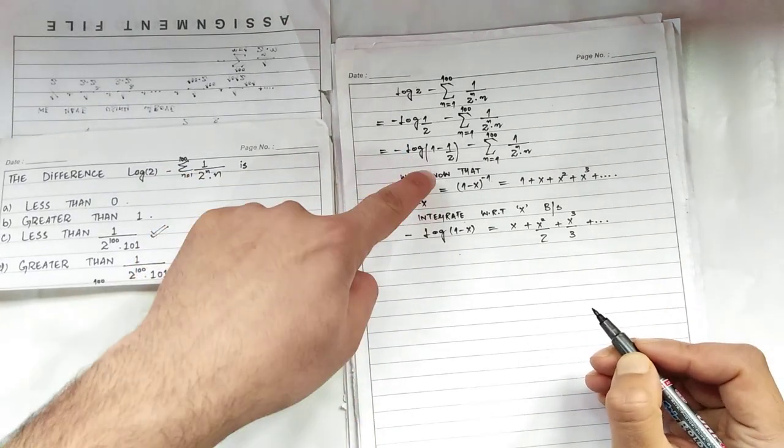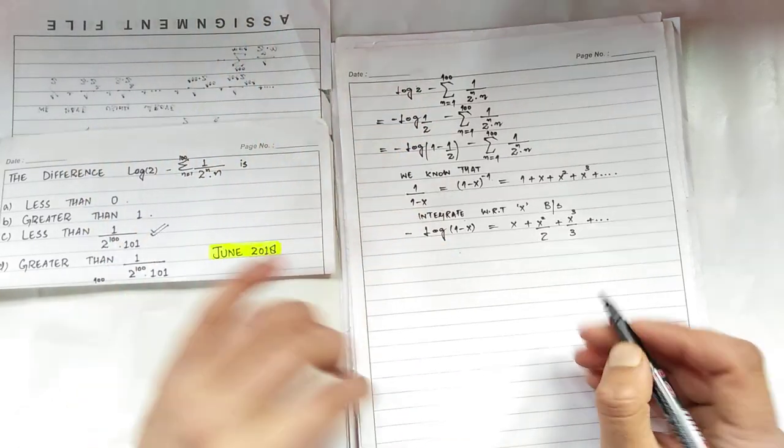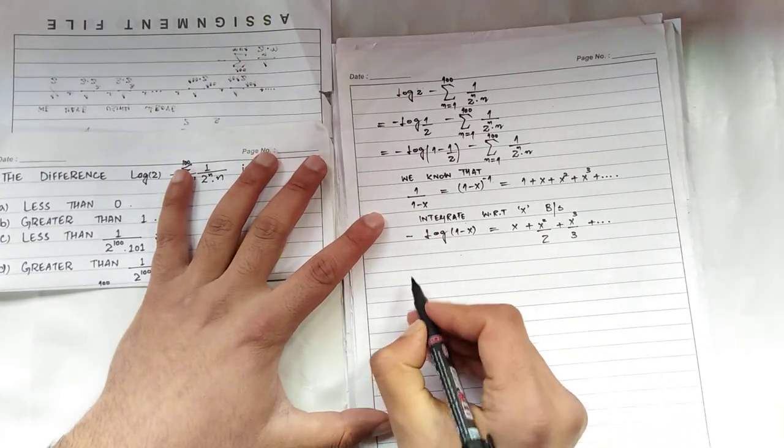When you integrate both sides with respect to x, you will be getting log of 1 minus x, and when you integrate this you will get x plus x square upon 2 and then x cube upon 3 plus so on. Just match this expression with this, so you will come to know this expression can be written using this.